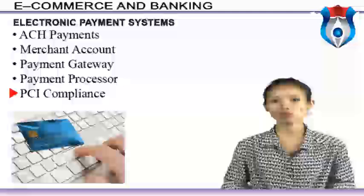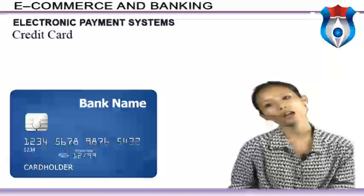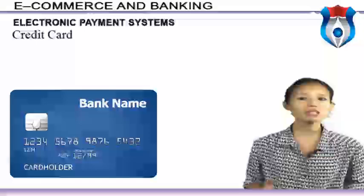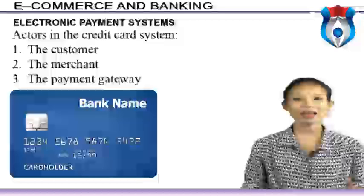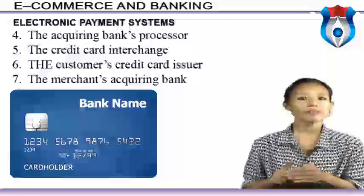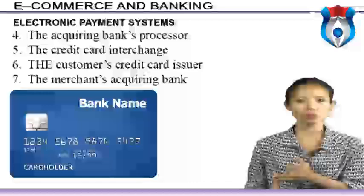A credit card is a small plastic card with a unique number attached to an account, with a magnetic strip embedded in it used to read the card via card readers. The actors in the credit card system are: the customer, the merchant, the payment gateway, the acquiring bank's processor, the credit card interchange, the customer's credit card issuer, and the merchant's acquiring bank.